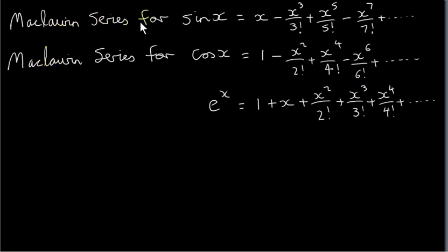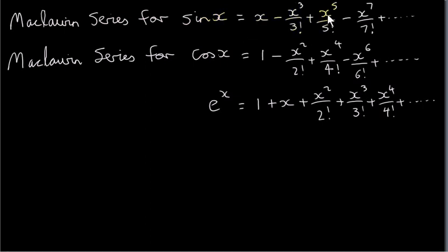Let's look at the McLaurin series expansions for the functions sine of x and cos of x. These are covered in other videos. For sine of x, where x is in radians — it's very important that x is in radians — we have x minus x cubed over 3 factorial plus x to the 5 over 5 factorial minus x to the 7 over 7 factorial, etc.